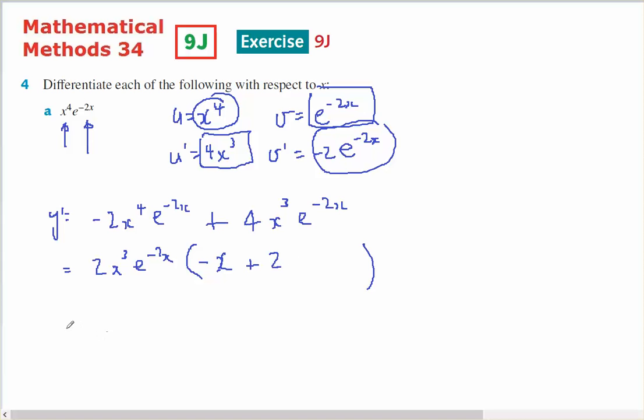So that's it. And I might clean that up and say I've got 2x cubed e to the minus 2x times 2 minus x, as being my factorized answer.